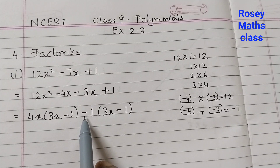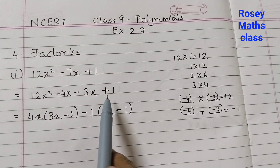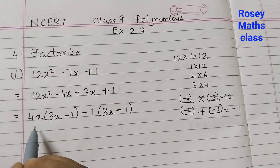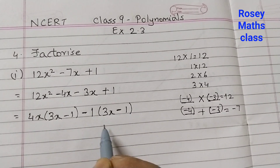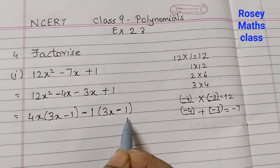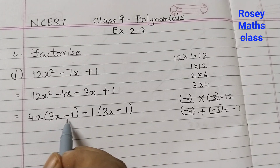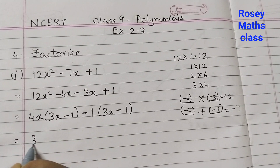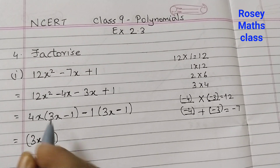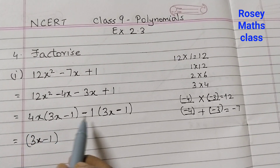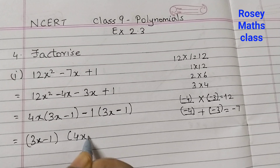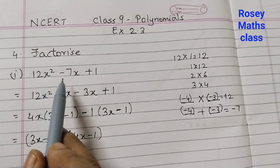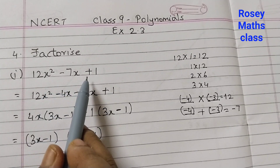Remember whenever you have a minus sign outside, if you have a plus sign inside, make it a minus sign. Now we have two terms with the common factor 3x minus 1. So the factors are (3x minus 1)(4x minus 1). These are the factors of 12x squared minus 7x plus 1.